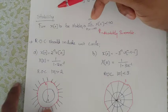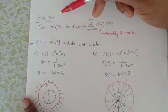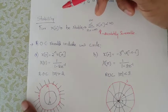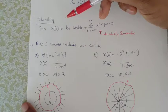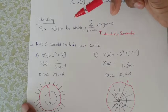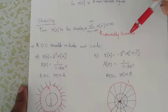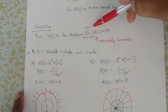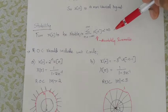x(n) and x(t) are stable conditions in the first module. x(t) should be absolutely integrable. In this case, x(n) should be absolutely summable. In this case, the integral of x(t) dt should be less than infinity.